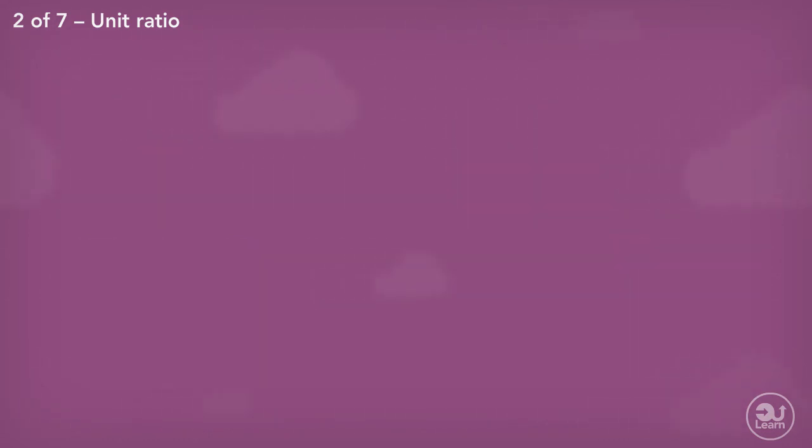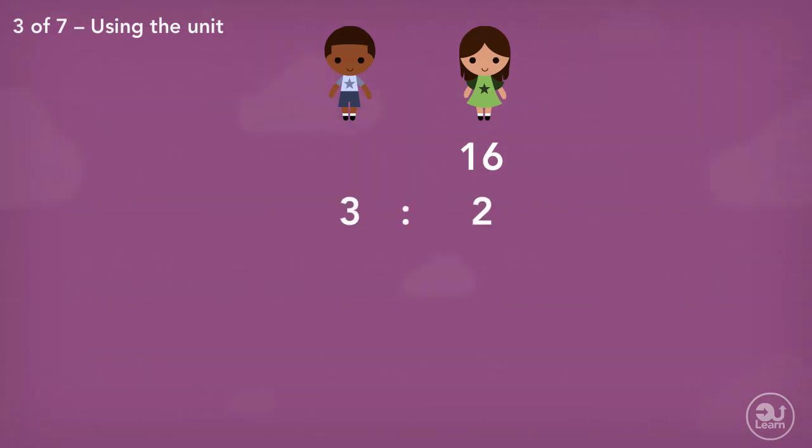Another example. Some nursery school toddlers went on a trip to the park. The number of girl toddlers was 16. The ratio of the number of boy toddlers to the number of girl toddlers was three to two. Work out the total number of toddlers at the park.